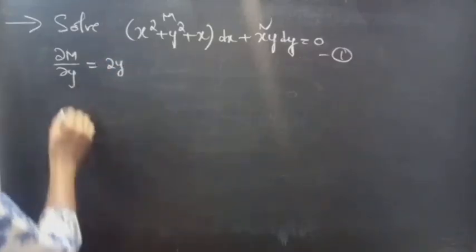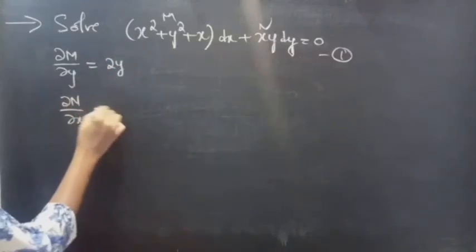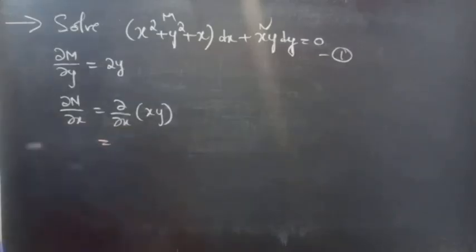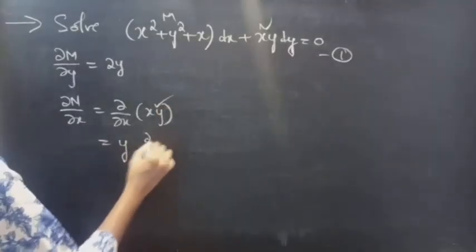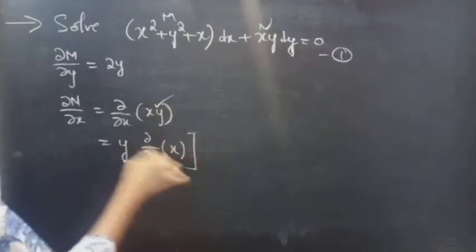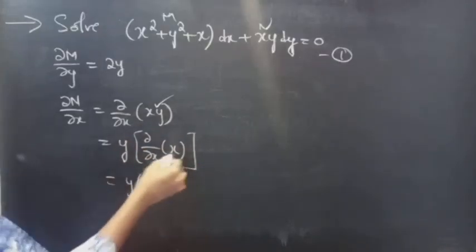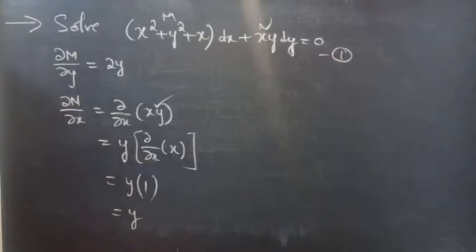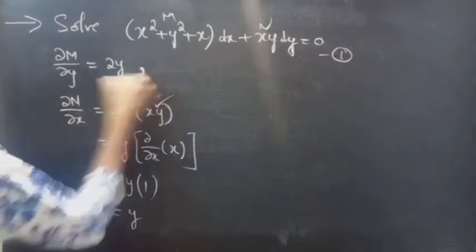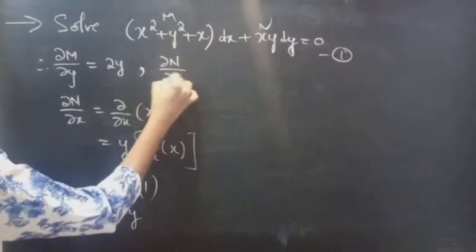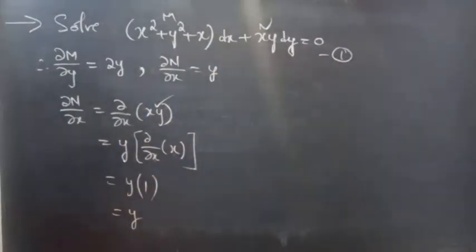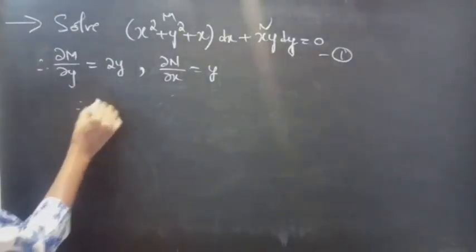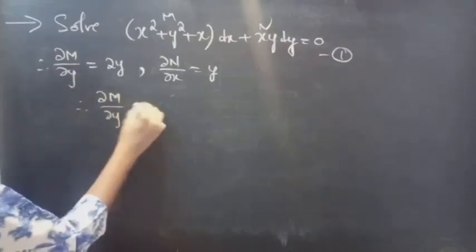Now let us find the partial derivative of N with respect to x, for N equals xy. Since we are doing partial derivative with respect to x, y will be treated as constant. This equals y into partial derivative of x with respect to x, which is y into 1, equal to y. Therefore, partial derivative of N with respect to x is y. It is clear that the partial derivative of M with respect to y is not equal to the partial derivative of N with respect to x.